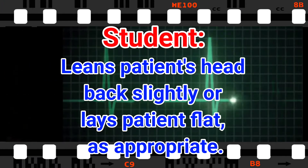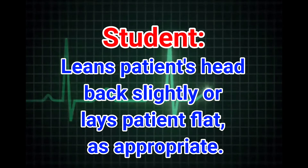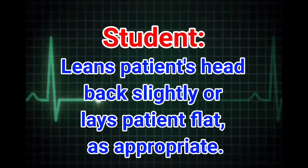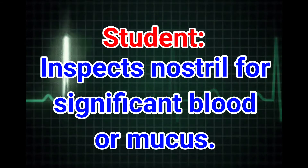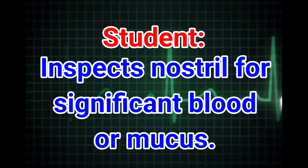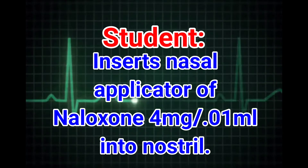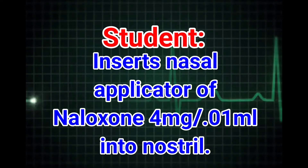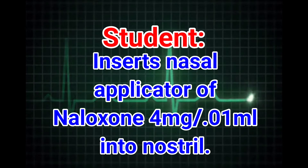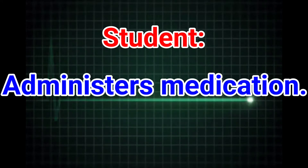Student leans patient's head back slightly, or lays patient flat as appropriate. Student inspects nostril for significant blood or mucus. Student inserts nasal applicator naloxone, 4 milligrams, 0.01 milliliters, into nostril. Student administers medication.